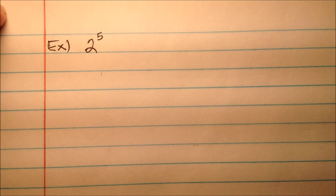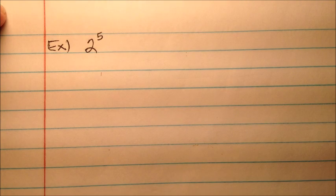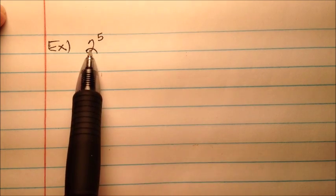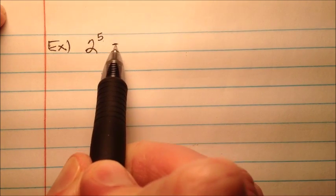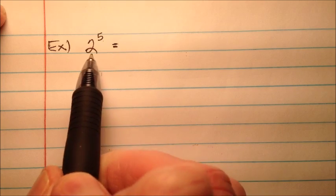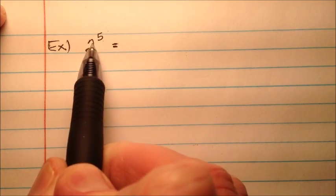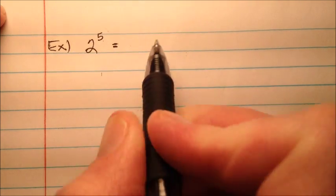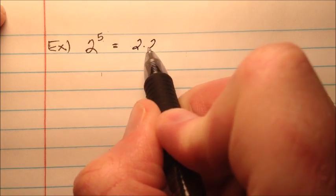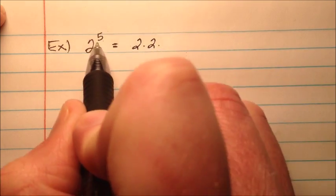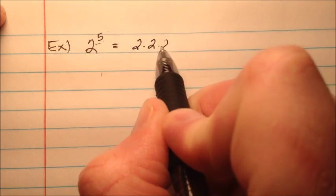In these examples, we're going to take a look at evaluating expressions that have exponents. So this first one is 2 to the power of 5. If you watched the previous video, you can take this from exponential form to expanded form by saying 2 multiplied by itself 5 times.